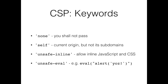'unsafe-inline' and 'unsafe-eval' are interesting — they're not used to specify origin, but for controlling what gets executed on the page. When script-src or default-src is set in CSP headers, inline scripts and eval are automatically disallowed by default. 'unsafe-inline' and 'unsafe-eval' let you explicitly lift those restrictions.